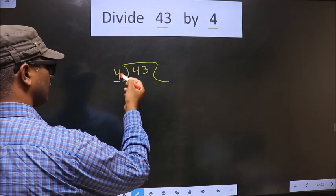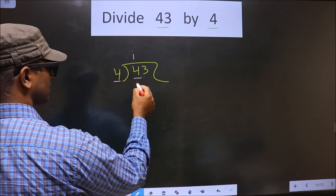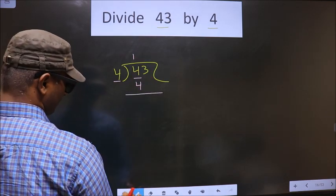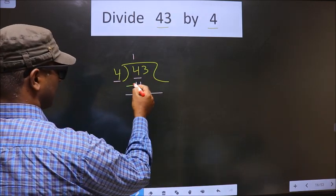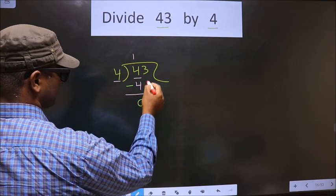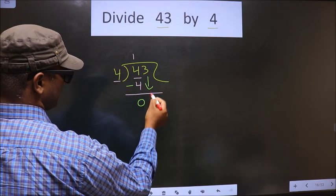When do we get 4 in 4 table? 4 once 4. Now we subtract. So we get 0. Now we take this number down that is 3.